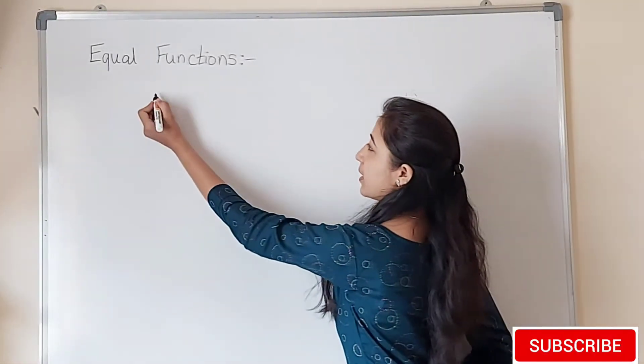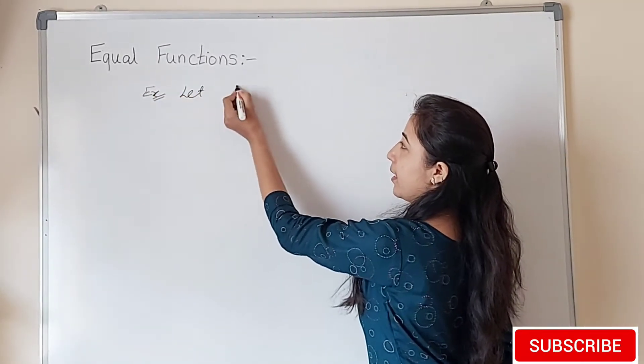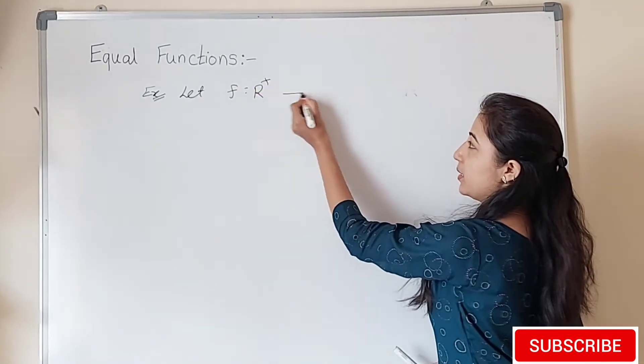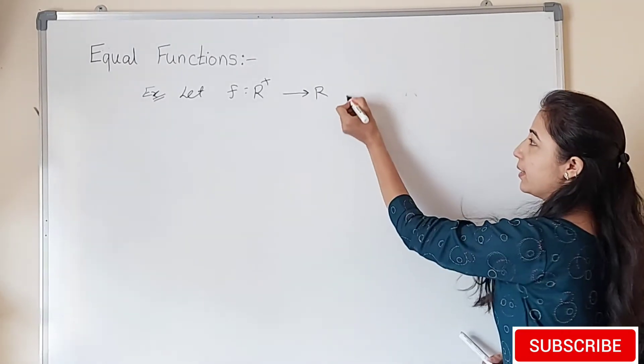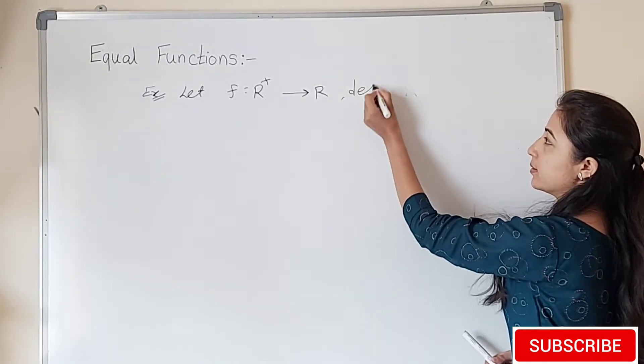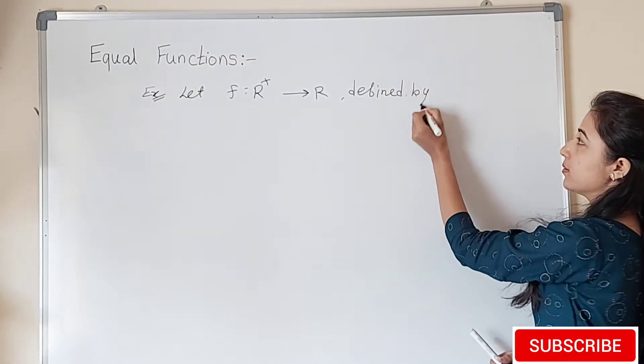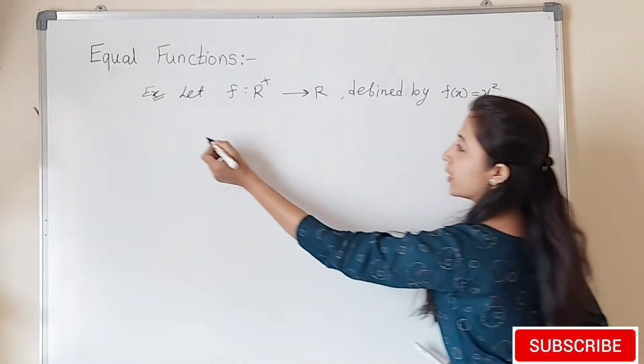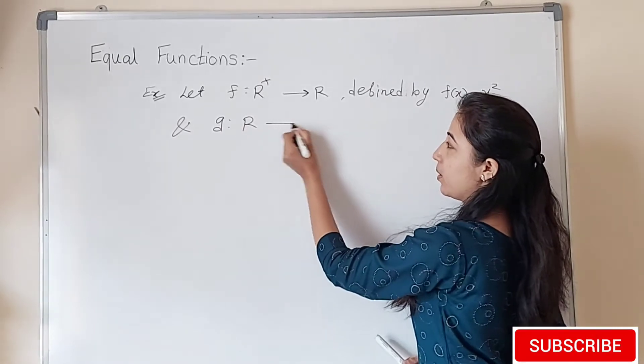Now we see the next example. Suppose we have given the function f is a mapping from set of positive real numbers to set of R defined by f(x) equals x squared.